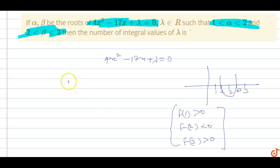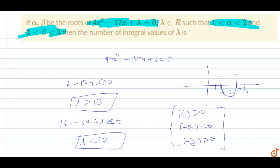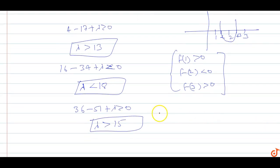For f(1) > 0: 4 - 17 + λ > 0, which means λ > 13. For f(2) < 0: 16 - 34 + λ < 0, which means λ < 18. Now applying f(3) > 0 gives us λ > 15.